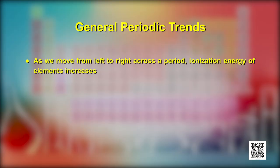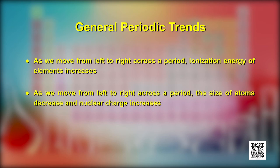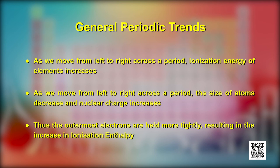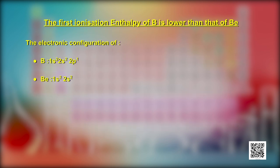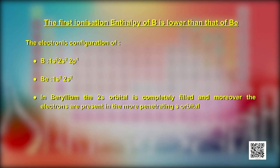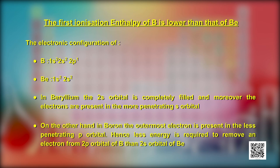Ionization enthalpy generally increases across a period. As we move left to right, nuclear charge increases regularly, so the outermost electrons are held more tightly, resulting in an increase in ionization enthalpy. However, there are a few exceptions. Beryllium has configuration 1s², 2s², whereas boron's configuration is 1s², 2s², 2p¹. In beryllium, the 2s orbital is completely filled and the electrons are present in the more penetrating s orbital. In boron, the outermost electron is in the less penetrating p orbital, so less energy is required to remove an electron from the 2p orbital of boron than the 2s orbital of beryllium.